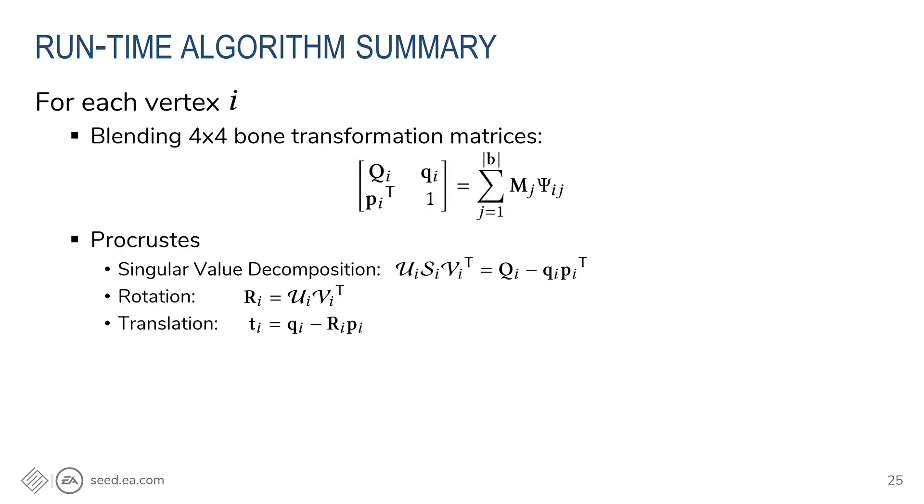Once we have the precomputed multi-weight matrices Ψ, the runtime algorithm is straightforward. We need to blend input bone transformation matrices M_j with weights Ψ_ij. The result here is one 4 by 4 matrix. We can use these sub-blocks Q and P to solve the Procrustes problem. Here, we use singular value decomposition to solve for the rotation matrix R_i, and then use the rotation to compute the translation vector t_i. This algorithm will give the highest deformation quality. However, it could be a bit expensive depending on the implementation of the 4 by 4 matrix operators and the 3 by 3 singular value decomposition.